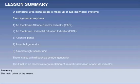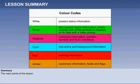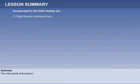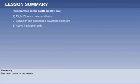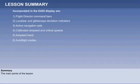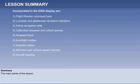The E-ADI is an electronic representation of an artificial horizon or attitude indicator. There is a color-coding convention. Incorporated in the E-ADI display are flight director command bars, localizer and glide slope deviation indicators, active navigation aids, calibrated airspeed and critical speeds, airspeed trend, autoflight modes, autopilot status, altimeter and vertical speed indicator, aircraft heading, and radio altitude.